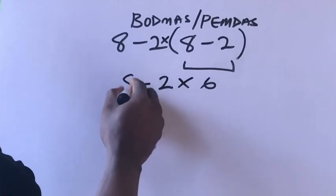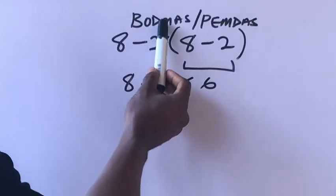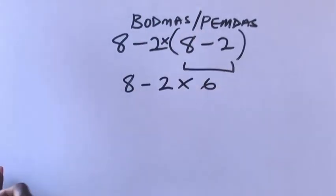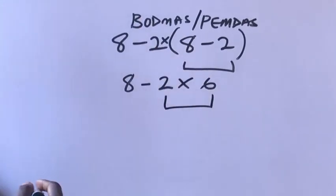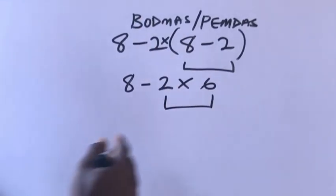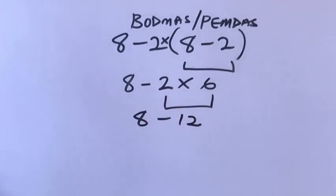Minus eight. Now in our order of operation, multiplication comes before subtraction. So let's multiply: two times six will give us what? 12. Then minus eight, minus eight.